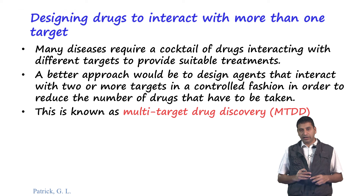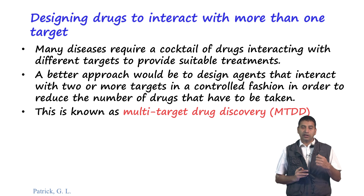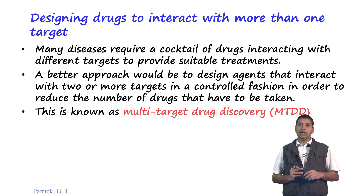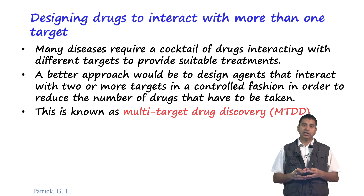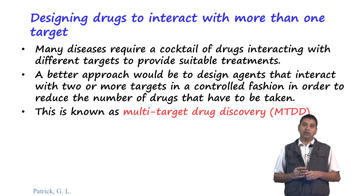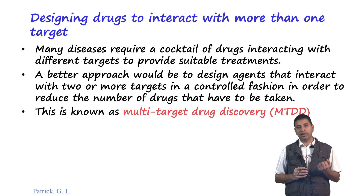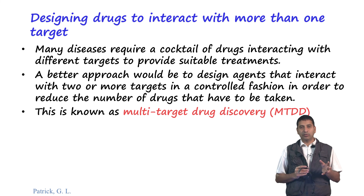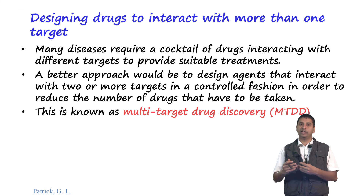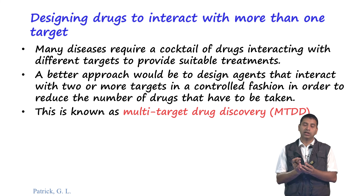The next strategy is called multi-target drug discovery (MTDD), where the concept is designing drugs to interact with more than one target. Frequently, diseases such as cancer or infectious diseases like HIV require a cocktail of drugs that interact with different targets to produce a cure. A possible improvement is to make a single molecule which can accomplish all of this together - designing agents that interact with two or more targets in a controlled manner. This may reduce the number of drugs patients need to take, since a single drug doing both may have potential advantages.